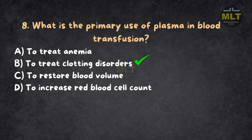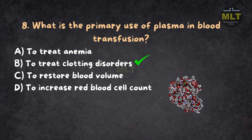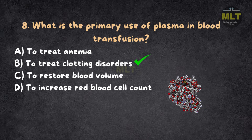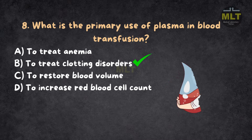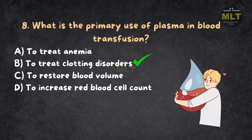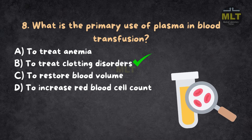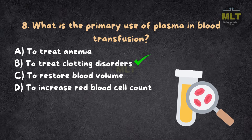Explanation: Plasma is rich in clotting factors and is primarily used to treat patients with clotting disorders like haemophilia or during massive bleeding. Plasma does not directly treat anemia or increase red blood cell count. Plasma can help restore blood volume, but its main function is related to clotting factors.